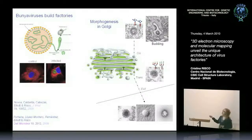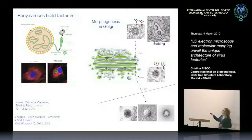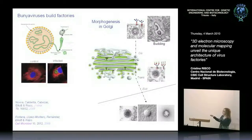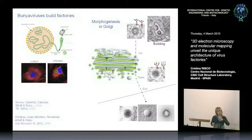Bunyaviruses are RNA viruses with three ribonucleoproteins of negative polarity. The membrane of the virus — the envelope — comes from the Golgi, which is the central element of the whole factory. We demonstrated that the virus builds immature particles on the cis side of the Golgi by budding, then moves towards the trans side where the particle changes structure, depending on the acquisition of complex sugars in the glycoproteins of the envelope. A second change occurs when the virus exits the cell — the reorganization of the glycoproteins builds the spikes that recognize the receptor to infect the cell.